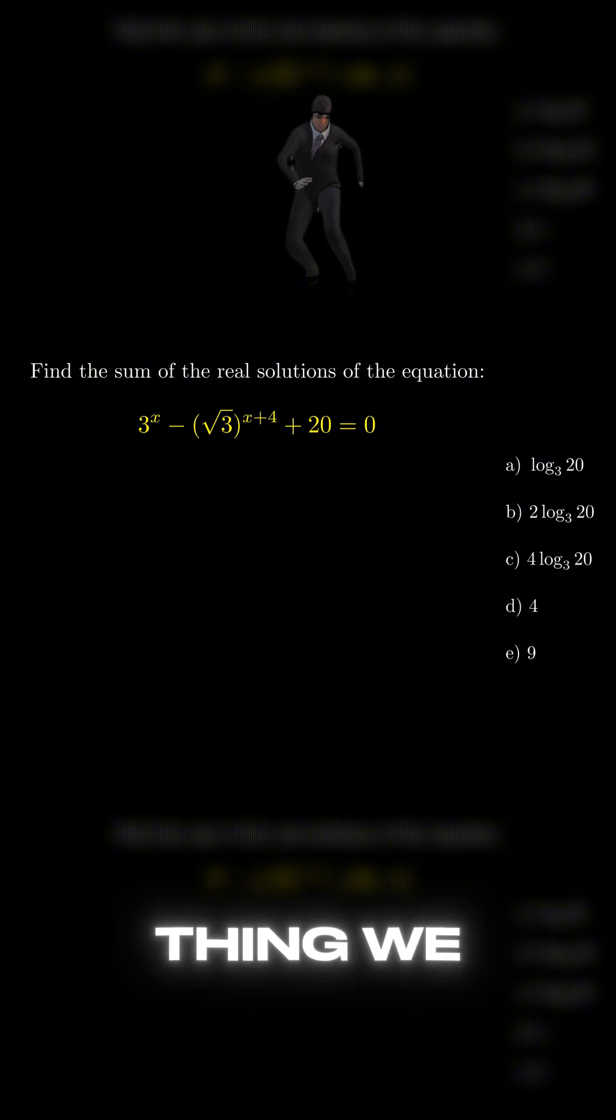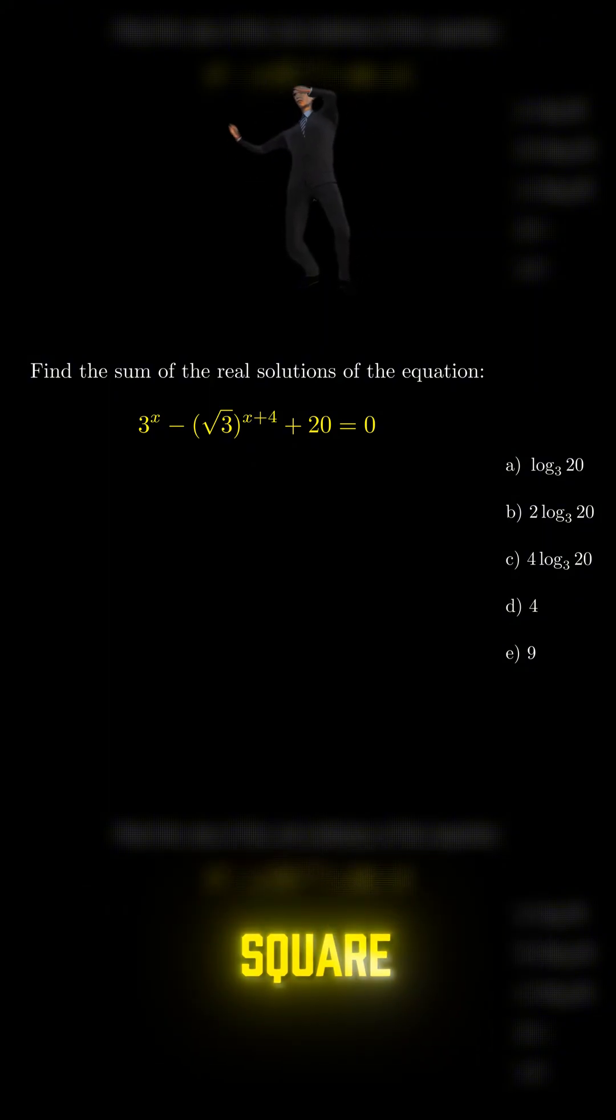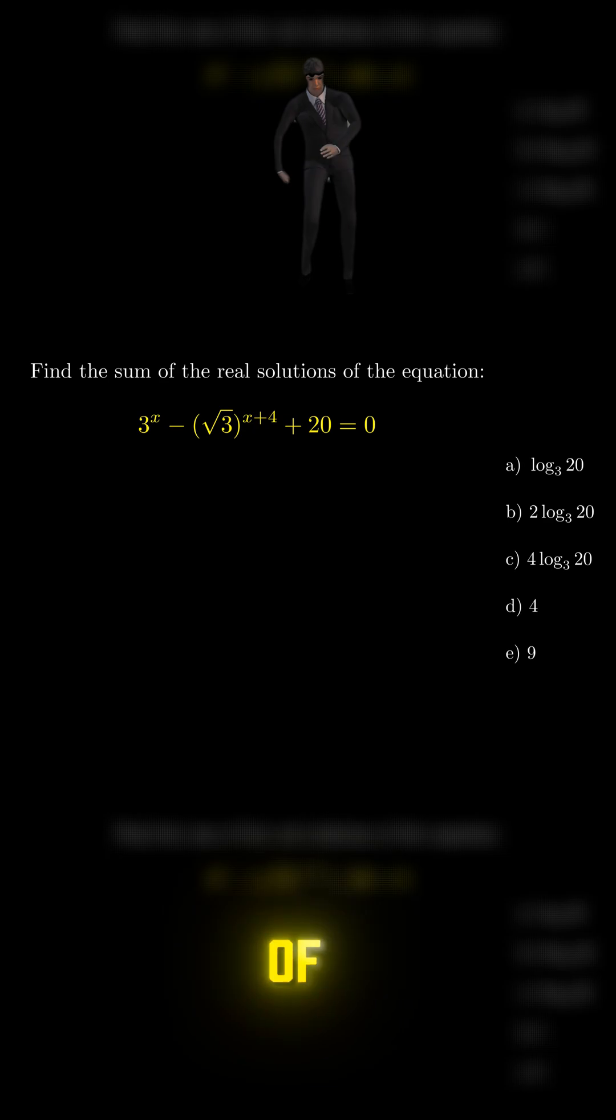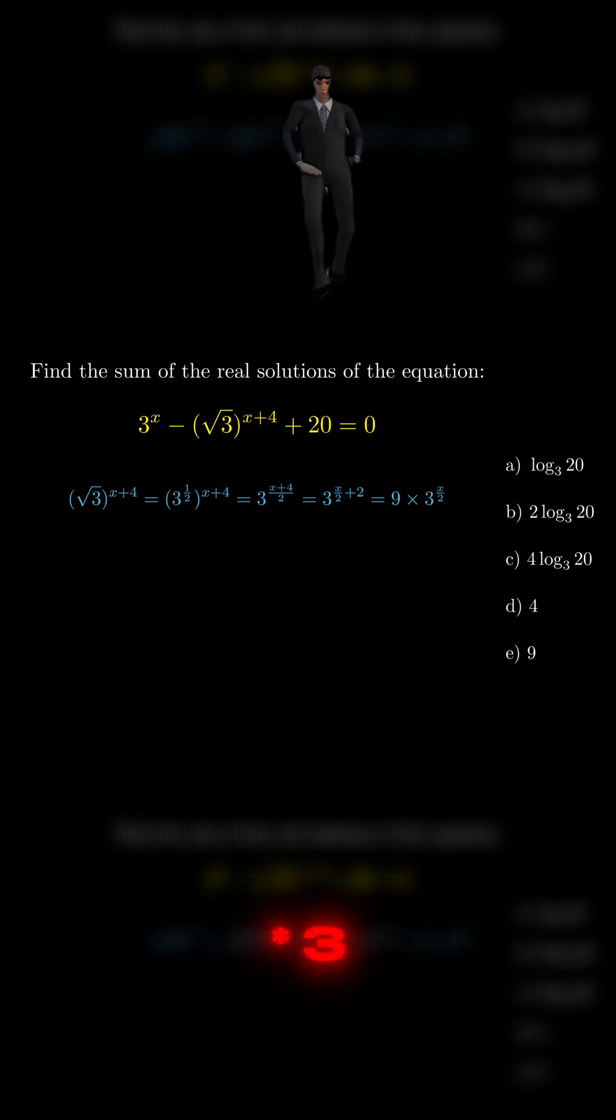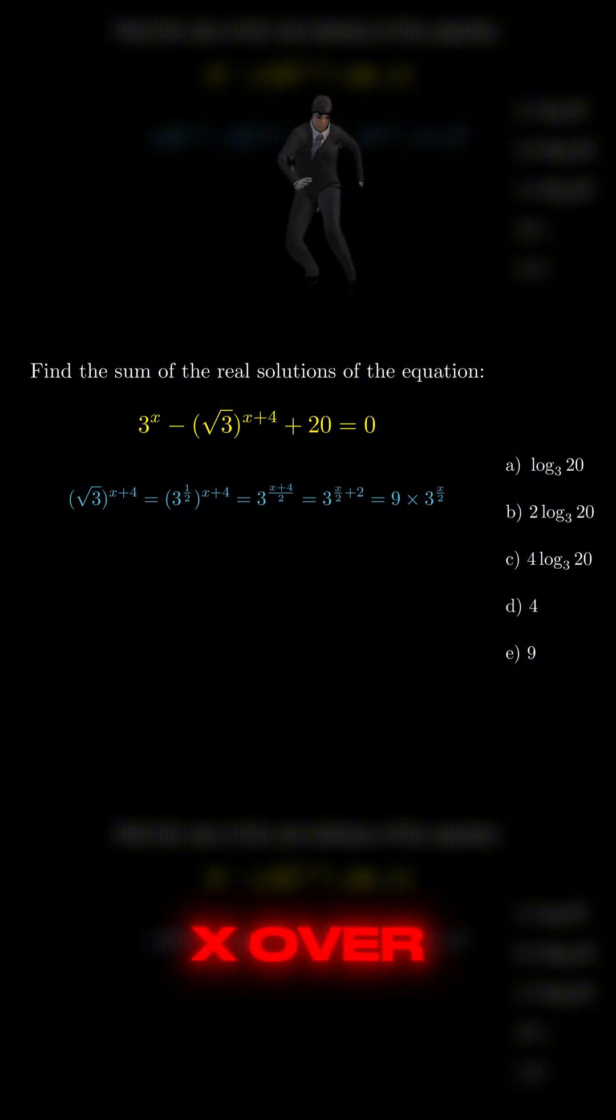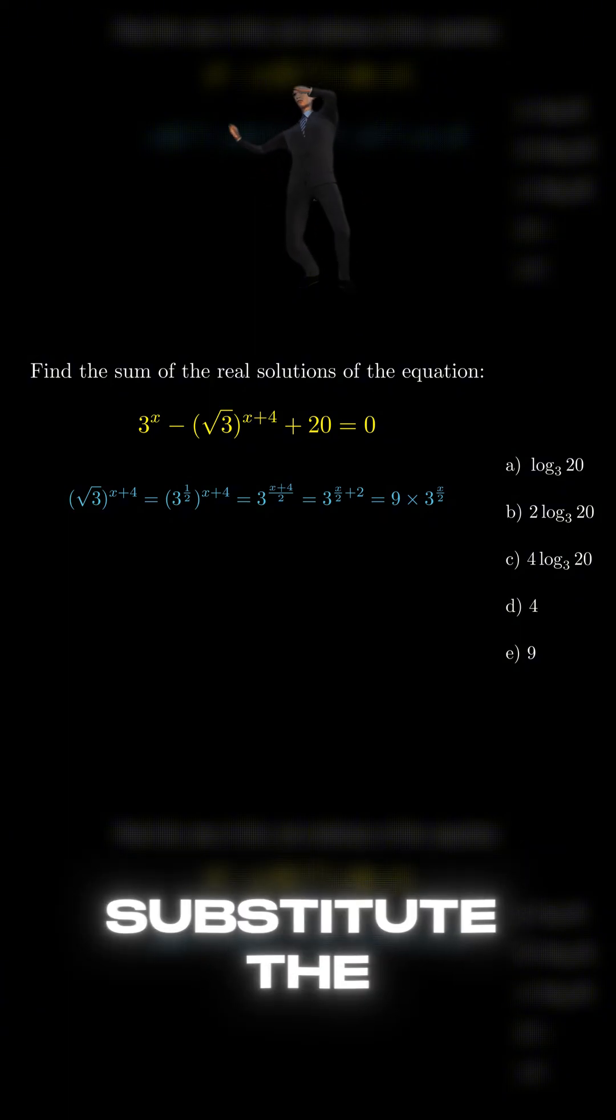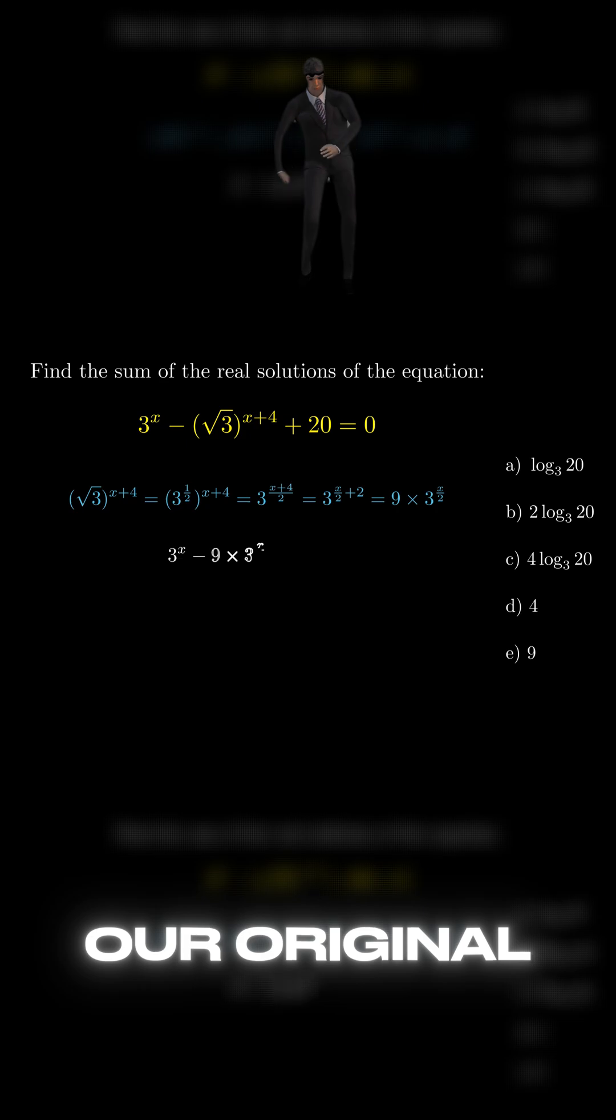The first thing we need to do is to rewrite the square root of 3 to the power of x plus 4, which should be equal to 9 times 3 to the power of x over 2. Now we substitute the value to our original equation.